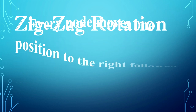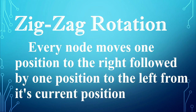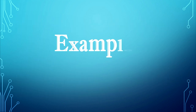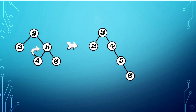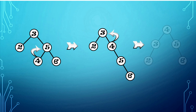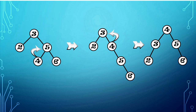Zig-zag rotation. In zig-zag rotation, every node moves one position to the right, followed by one position to the left from its current position. We will splay element 4 using zig-zag rotation. The element 4 will be moved once to the right, and then moved once to the left. In the first rotation, element 4 will move once to the right and become the parent node of element 5. Then, move element 4 once to the left. The result will be: element 4 will be the new root node, element 3 will be the left child, and element 5 will be the right child.